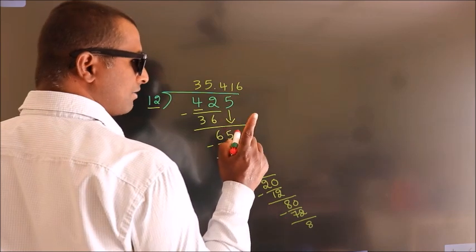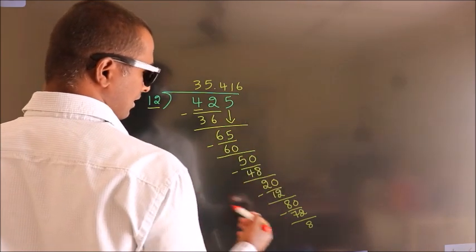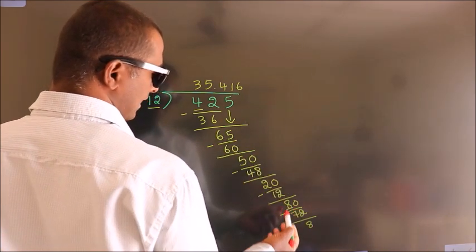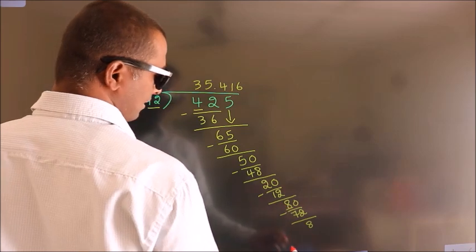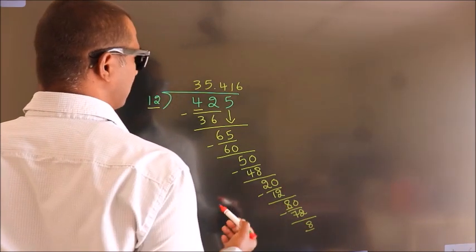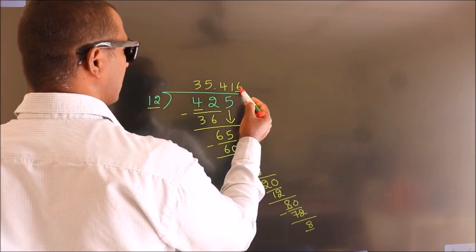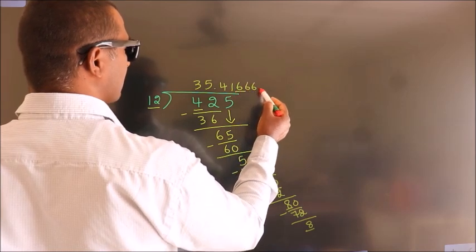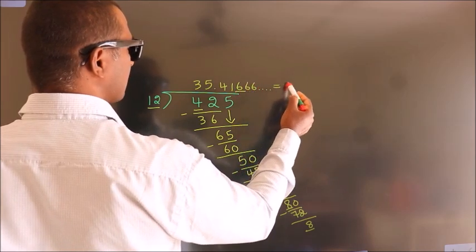Now you observe. Here we had 8, and we got 8 again. That means this number keeps on repeating. So this is our quotient.